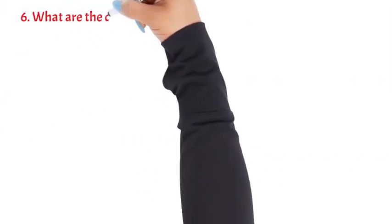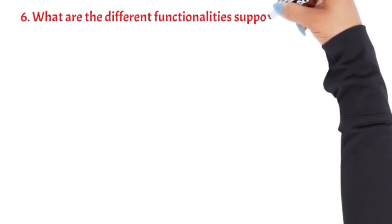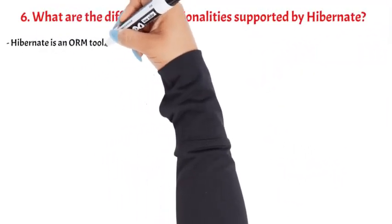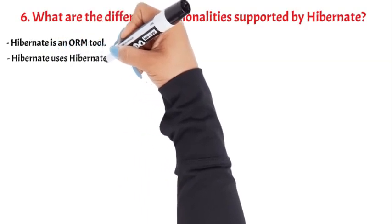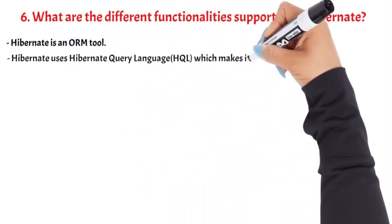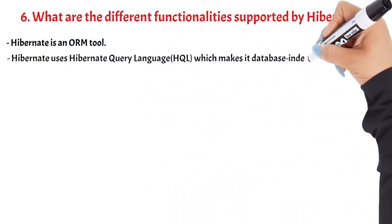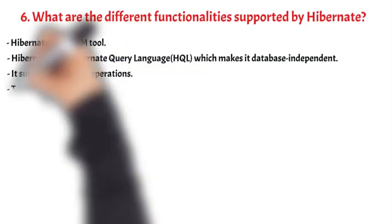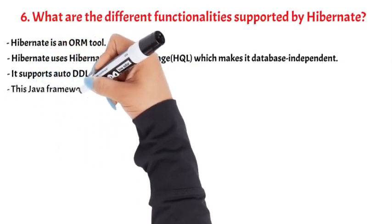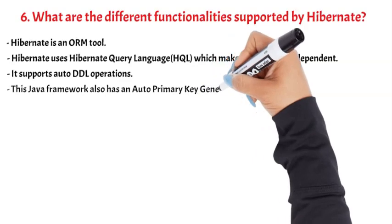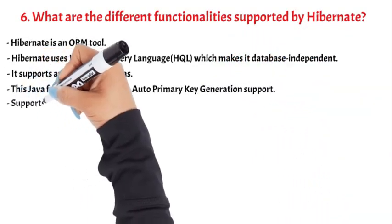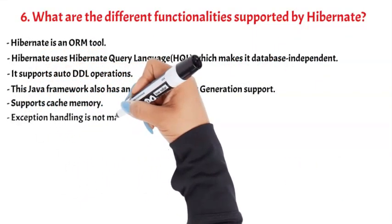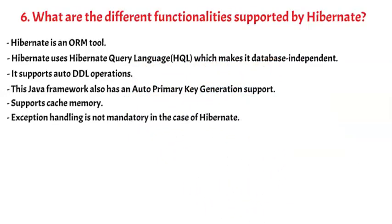Question 6: What are the different functionalities supported by Hibernate? Hibernate is an ORM tool. It uses Hibernate Query Language (HQL) which makes it database independent. It supports auto DDL operations. This Java framework also has auto primary key generation support. It supports cache memory. Exception handling is not mandatory in the case of Hibernate.